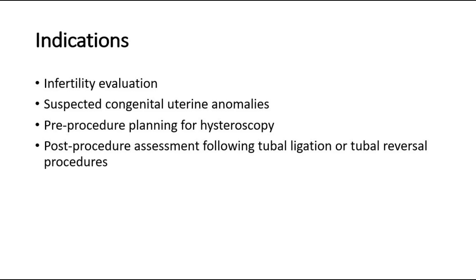The third indication is pre-procedure planning for hysteroscopic procedures including myomectomy, adhesion resection, and septum resection. HSG helps to identify the location and size of the lesions for resection before doing hysteroscopy. The fourth indication is for assessment after procedures such as tubal ligation or tubal reversal procedures.